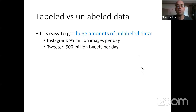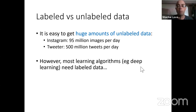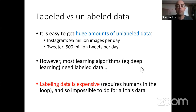So what is active learning? It starts with the observation that getting a large amount of unlabeled data is very easy — Instagram gets almost 100 million images every day and Twitter gets almost half a billion tweets every day. The problem is that most learning algorithms, in particular deep learning, want labeled data. And labeling data is expensive because it takes a person to do it, costs time and money.